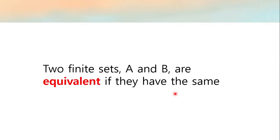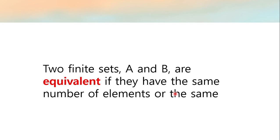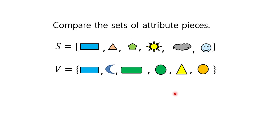Next is what we call equivalent sets. Two finite sets, A and B, are said to be equivalent if they have the same number of elements or the same cardinality. It doesn't have to be exactly the same elements — the only important thing is the same cardinality. For example, sets S and V have different figures, but both have a cardinality of 6. Therefore, S and V are equivalent.